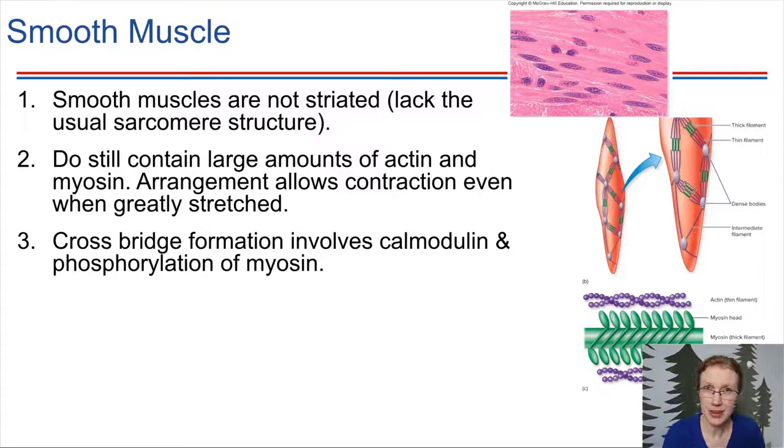Well, instead of troponin being involved, smooth muscle has a different protein, it's called calmodulin. Calmodulin, that name should ring a bell. That was in one of our second messenger systems, which you can go back and review if that's not ringing any bells. But anyway, calmodulin is kind of there in place of troponin in smooth muscle.